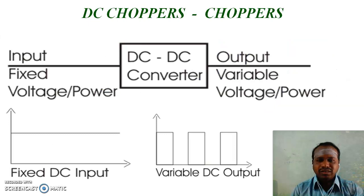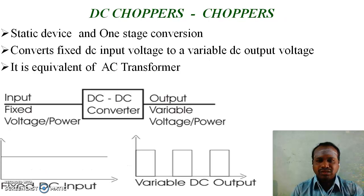DC choppers, or simply known as choppers, are static devices with one-stage conversion. They convert fixed DC input voltage to a variable DC output voltage, and are equivalent to an AC transformer.